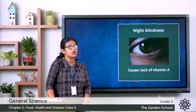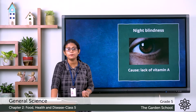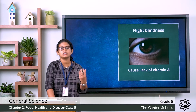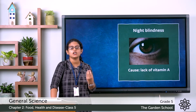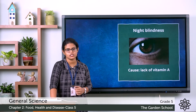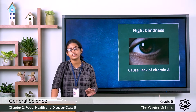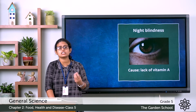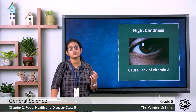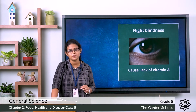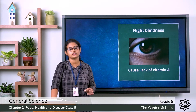The first deficiency disease is night blindness. When a person is not able to see in the darkness or dim light, that means the person has night blindness. Do you know the cause of this disease? It is caused due to lack of vitamin A, which keeps our eyes healthy.